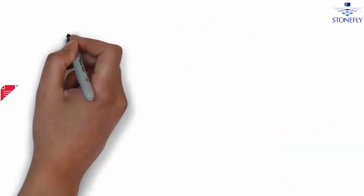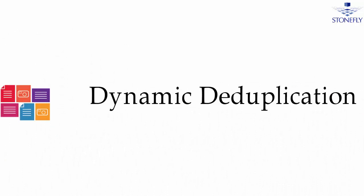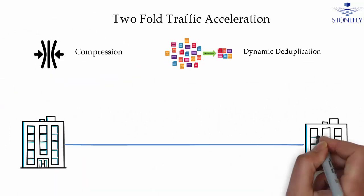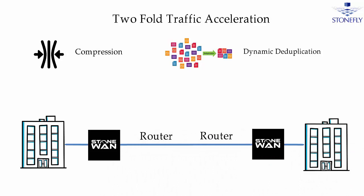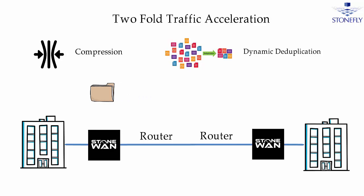Stone Van accelerates data traffic via a two-fold process: compression and deduplication. This is done on each TCP packet received at the data lines. Stone Van lies in the middle of the data transfer path between two branches. When data is transferred, the appliance receives it first, compresses it, and then transfers it to the receiving branch. The Stone Van appliance at the source branch first compresses the TCP packet in order to reduce packet size. This packet is then deduped to remove redundant data. Once both of these steps are completed, the resulting packet is considerably smaller compared to the original.